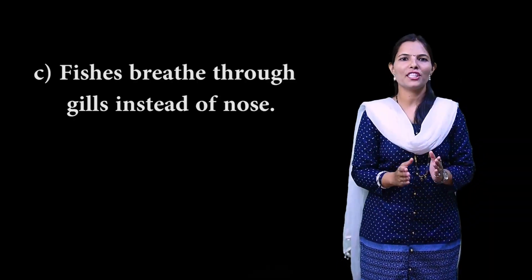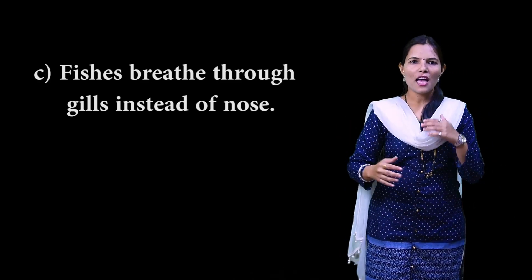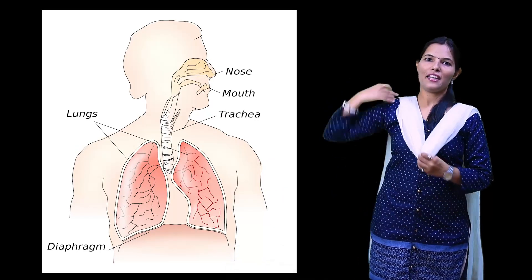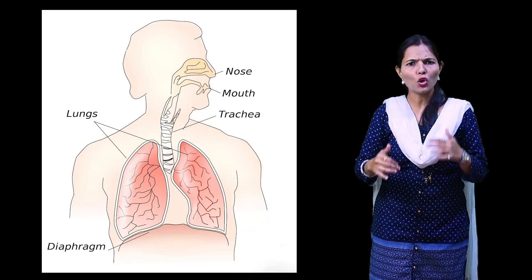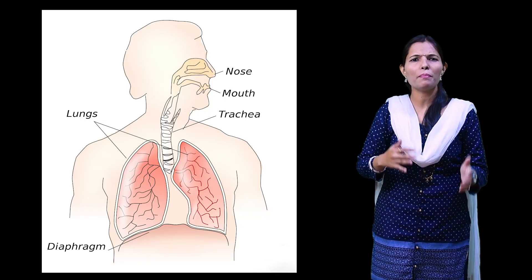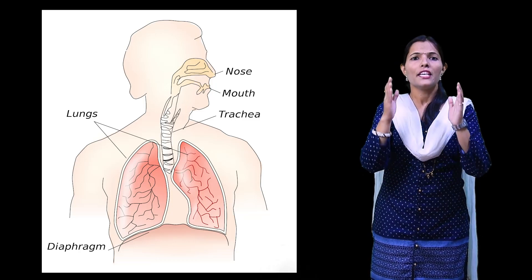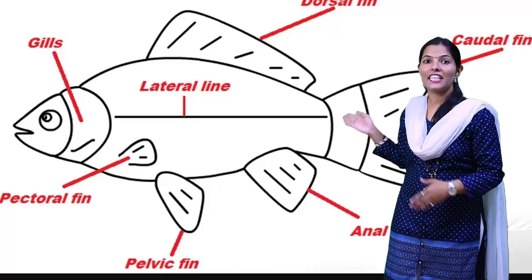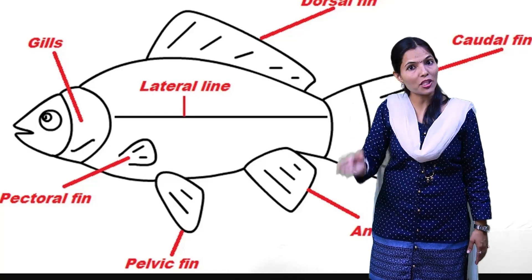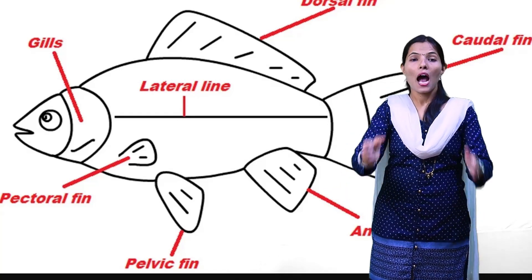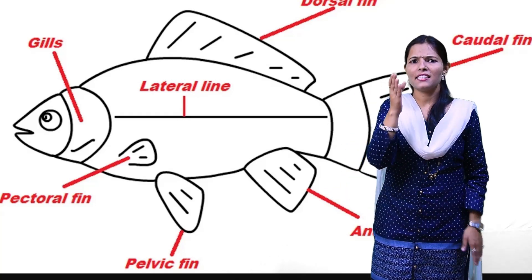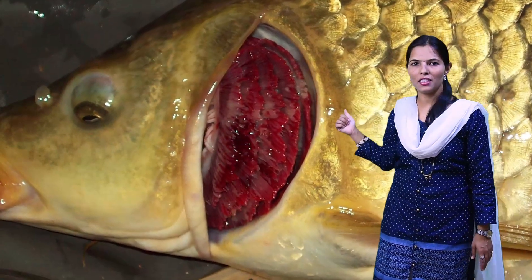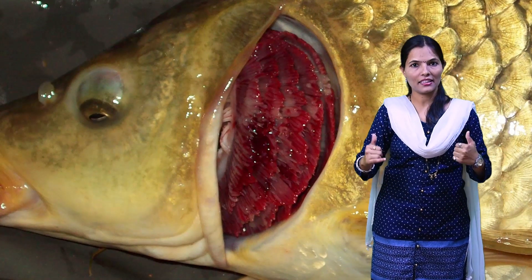The next adaptation of fishes is that they have gills. When it comes to breathing, humans use lungs. But fishes have gills. The gills are used for respiration — for breathing. You can see the gills on the screen. They are the organs fishes use for breathing in the water.